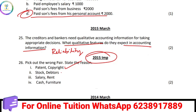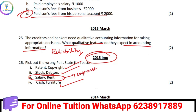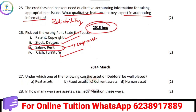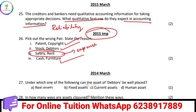Stock and debt are current assets. Salary, rent, cash, furniture, and expense — all assets are expenses. Under which one of the following can the asset of debtors be placed? Debtors can be found in real assets, fixed assets, current assets, or human assets.